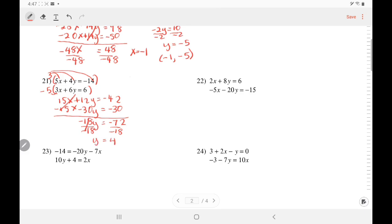Plug it back in. 5x plus 4. Plug in your 4 equals negative 14. 5x plus 16 equals negative 14. Subtract. 5x equals negative 30. Divide. x equals negative 6. Present negative 6, 4.